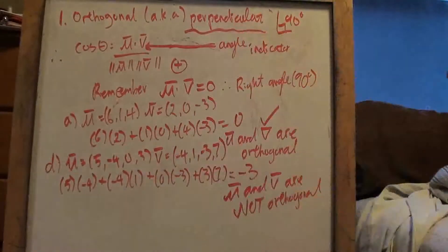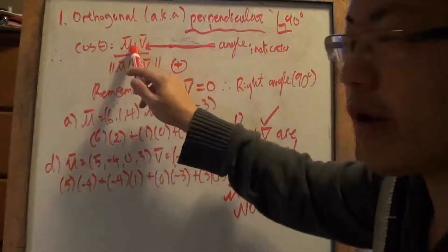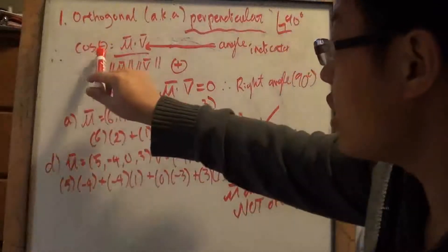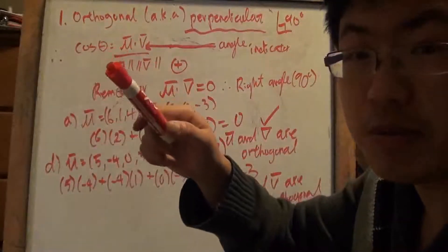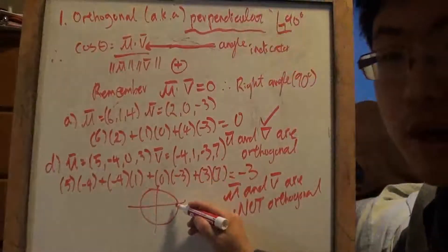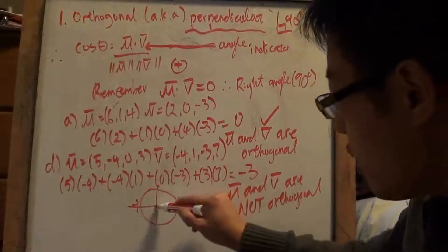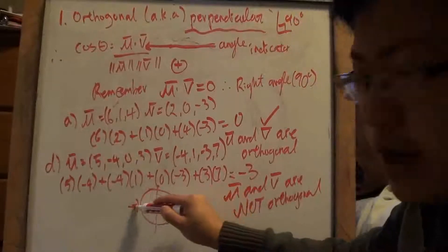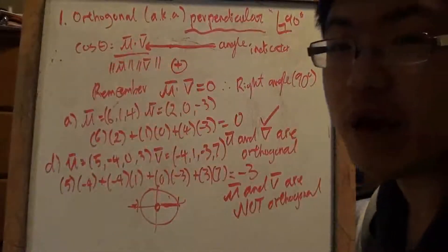So it just means perpendicular, 90 degrees. We're going to brush the concept a little bit again, but remember in the last section we were talking about this — how the angle is indicated because the norm of vectors u and v are going to be some positive numbers. The thing that indicates the angle for cosine is the dot product. Remember the unit circle? The cosine value has to be between negative 1 and 1. Between 1 and 0 gives positive x, and between 0 and negative 1 gives the negative x.